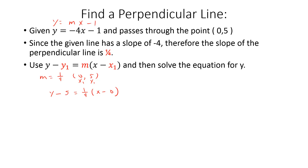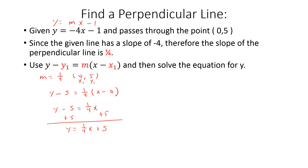It's not really necessary to clear the fraction here since we have x minus 0. Anything times 0 is 0, so we get y minus 5 equals one-fourth x. Adding 5 to both sides gives us y equals one-fourth x plus 5. That is the equation of a line perpendicular to the given line passing through the point (0, 5).